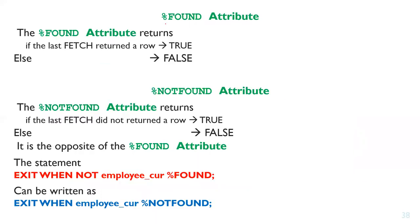The second attribute is %FOUND. The %FOUND attribute returns true if the last fetch returned a row. If the last fetch did not return a row, it returns false. The %NOTFOUND attribute is the opposite of %FOUND — if no row was returned it evaluates to true.